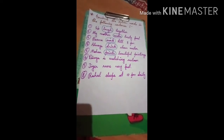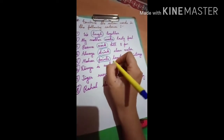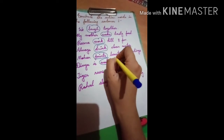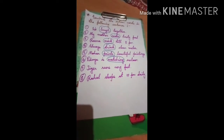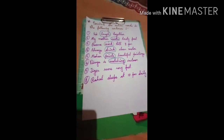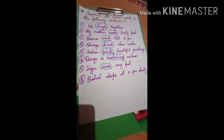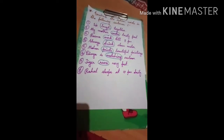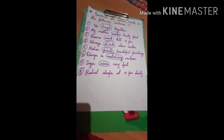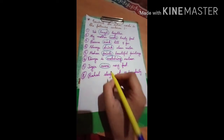Question five — 'Mohan paints beautiful paintings.' The action word is 'paints.' Question six — 'Divya is watching cartoon.' The action word is 'watching.' Question seven — 'Tiger runs very fast.' The action word is 'runs.'